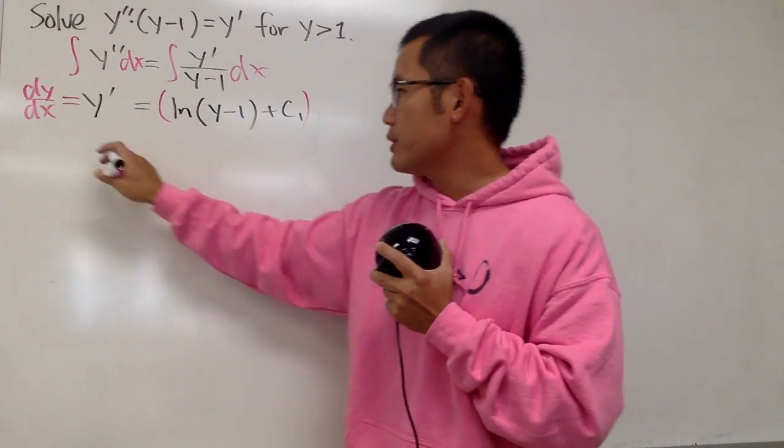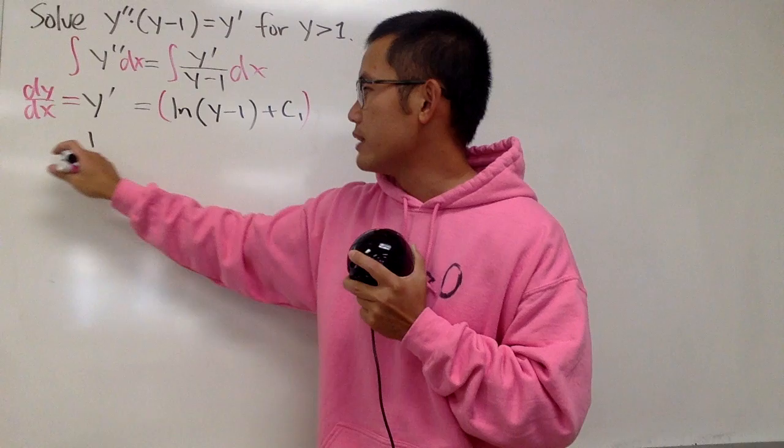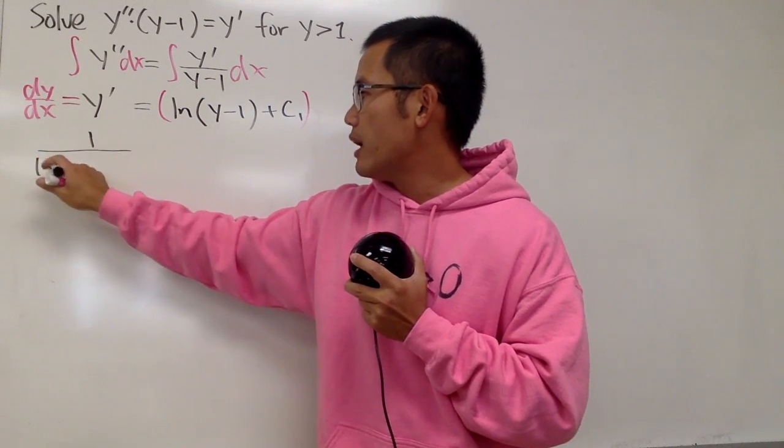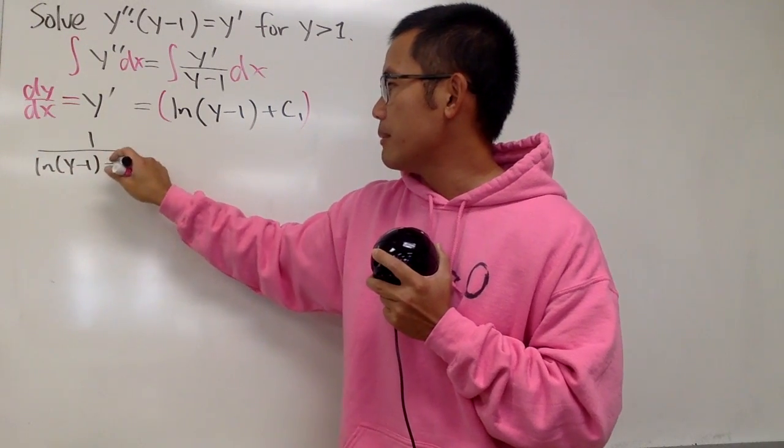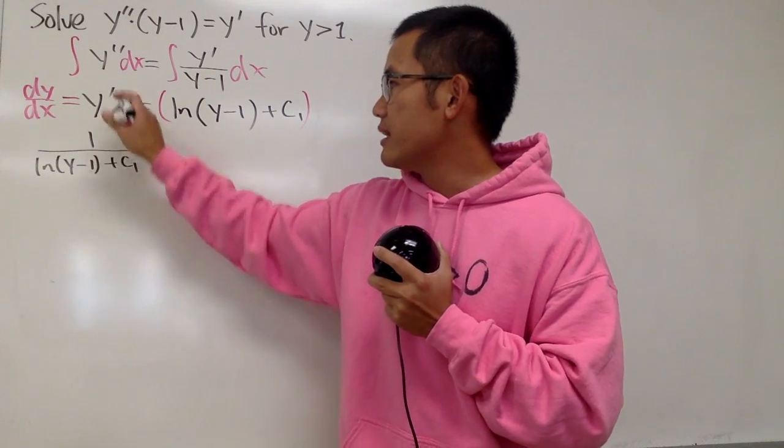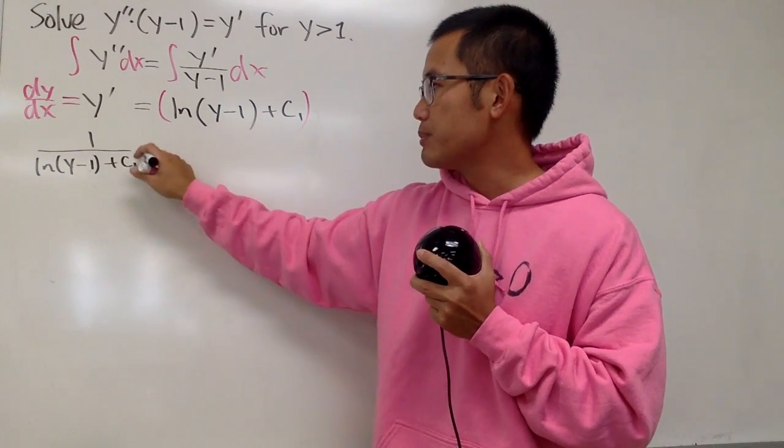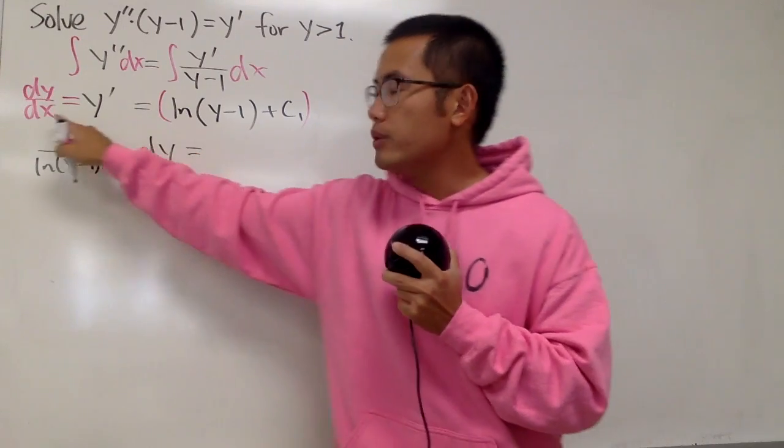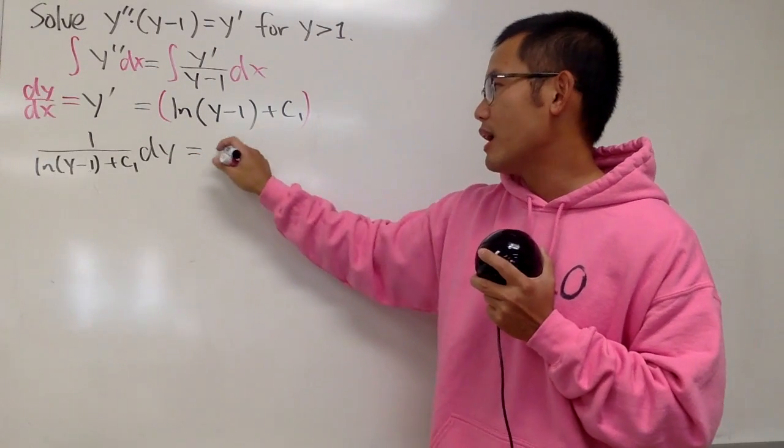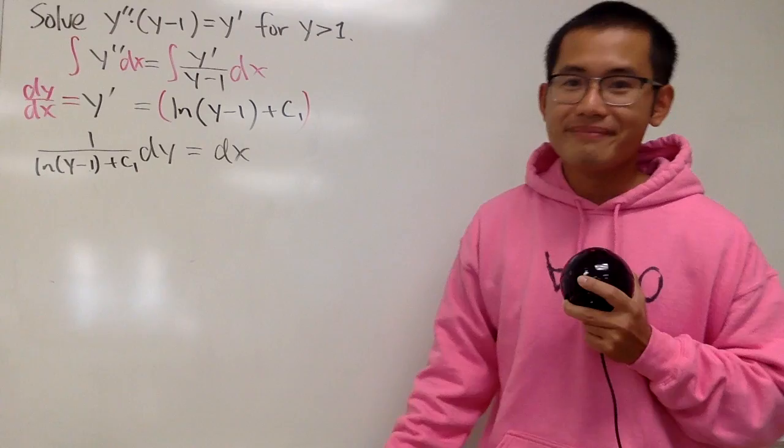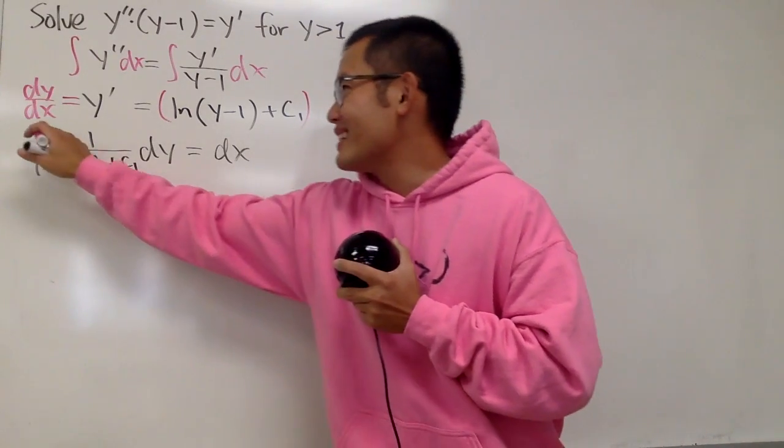So, let's put that down first. We have 1 over ln parentheses y-1, and then plus c1, like this, and that's in the y world, so let's put down dy, and that's equal to the dx, right here on the right-hand side, by itself. Now, we can just, again, integrate both sides.